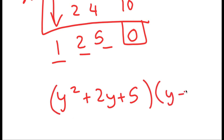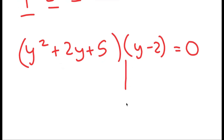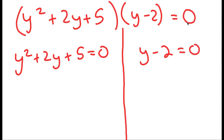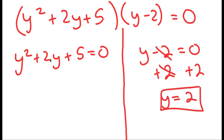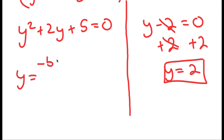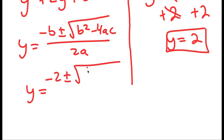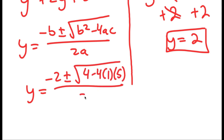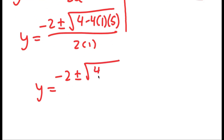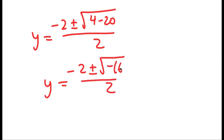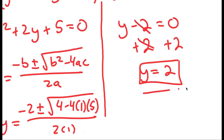So I get (y squared plus 2y plus 5) times (y minus 2) equals 0. This gives me two equations: y squared plus 2y plus 5 equals 0, and y minus 2 equals 0. Applying the quadratic formula to y squared plus 2y plus 5 equals 0, I get y equals negative 2 plus or minus the square root of 4 minus 20 over 2, which equals negative 2 plus or minus the square root of negative 16 over 2. Because we have the square root of a negative number, we cannot use those solutions, meaning we can only use y equals 2.